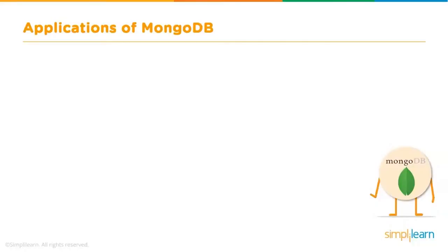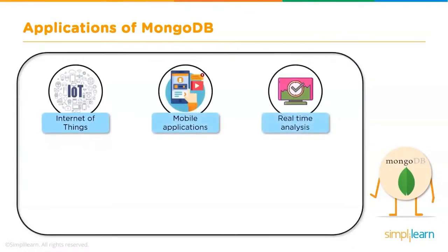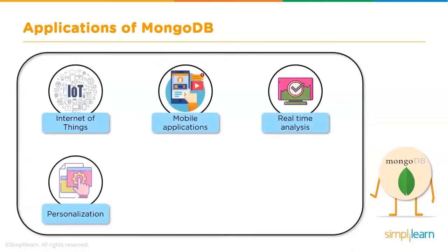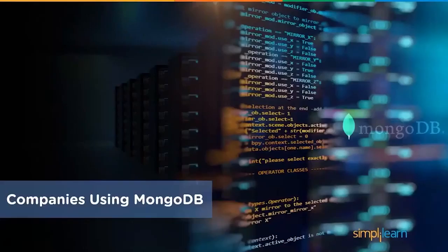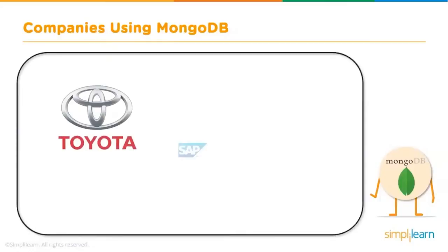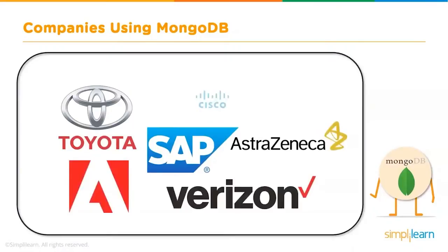Several areas of technology use MongoDB as their DBMS currently. Some of them are Internet of Things, Mobile Applications, Real-Time Analysis, Personalization, Catalog Management, and Content Management. Companies like Toyota, SAP, AstraZeneca, Adobe, Verizon, Cisco, Barclays, and Google, among others, readily deploy MongoDB as their database management system.